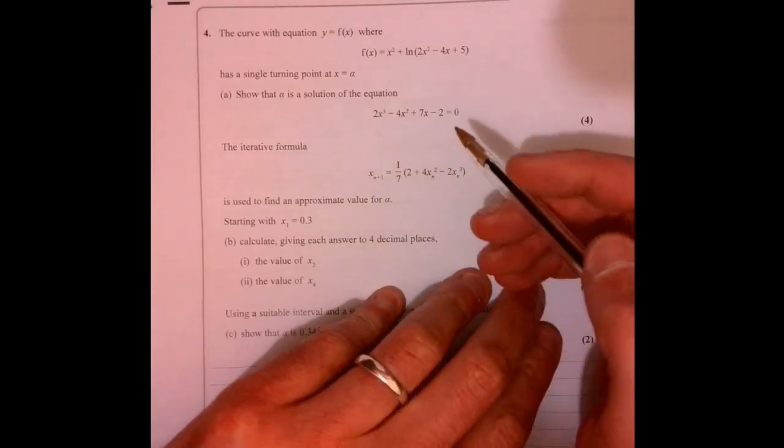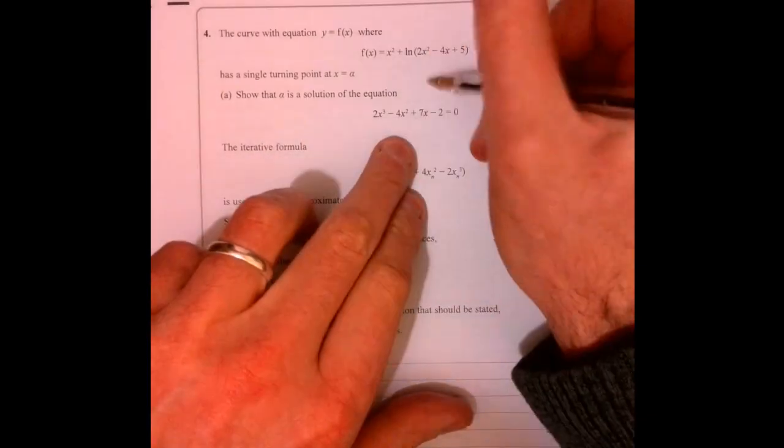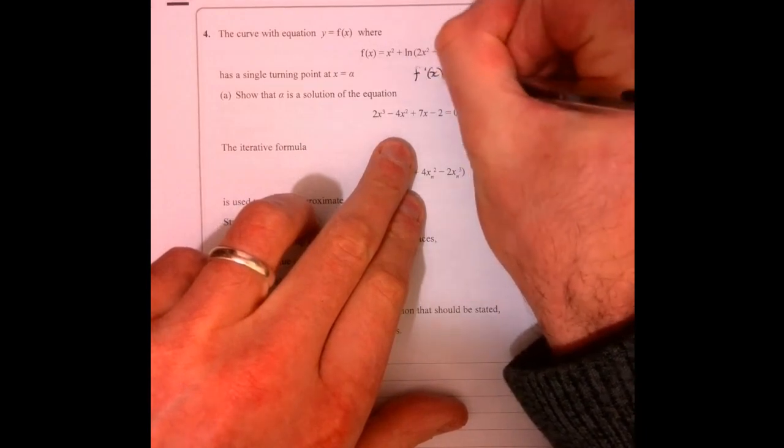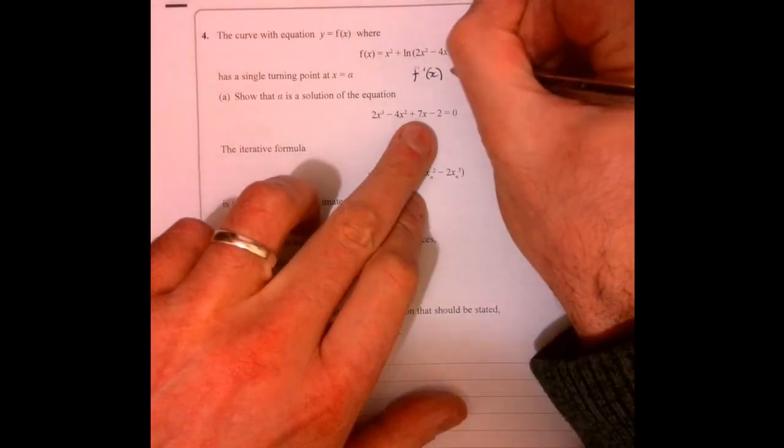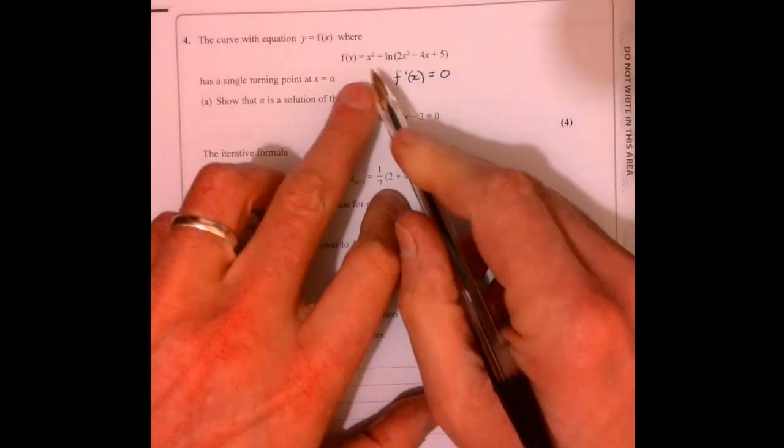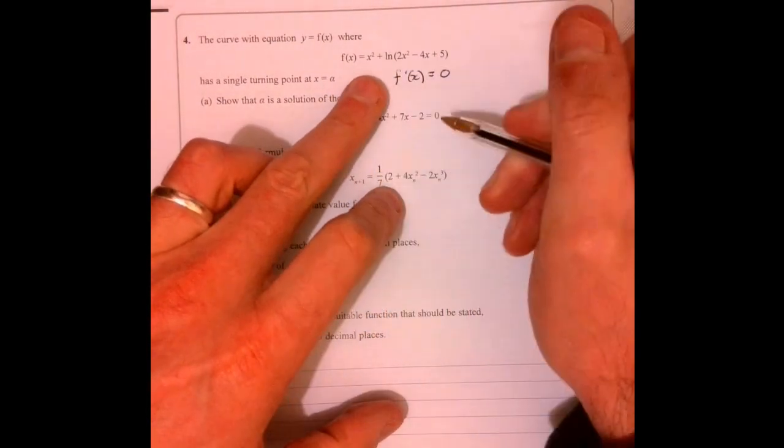Question four. So what this means is find a turning point. You differentiate and you find out when it's equal to zero.